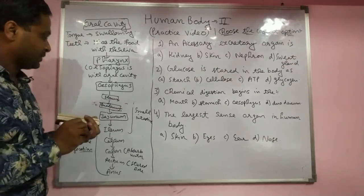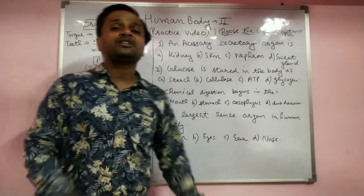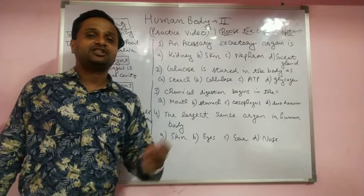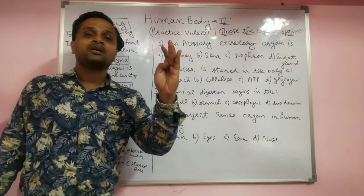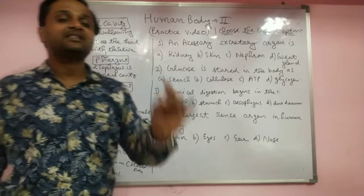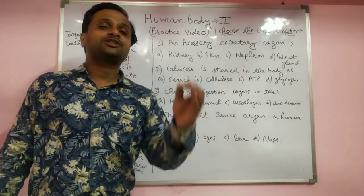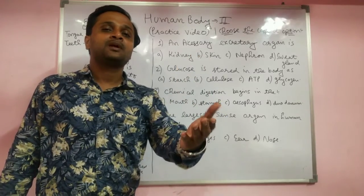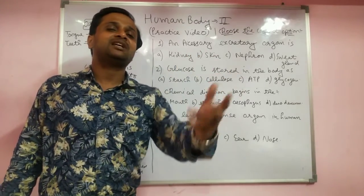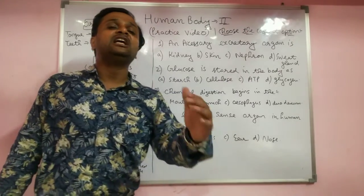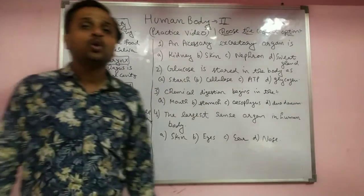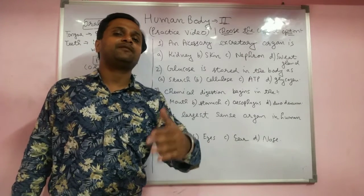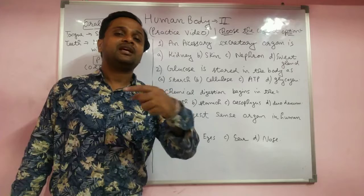In the stomach, gastric juices are released. These contain three components: first is HCl, which kills bacteria in the food and provides an acidic medium; second is mucus; and third is the pepsin enzyme, which works only in acidic medium and converts protein into peptones.